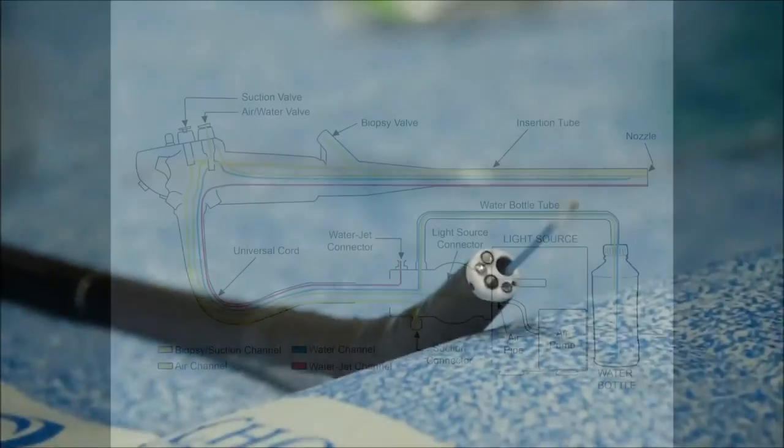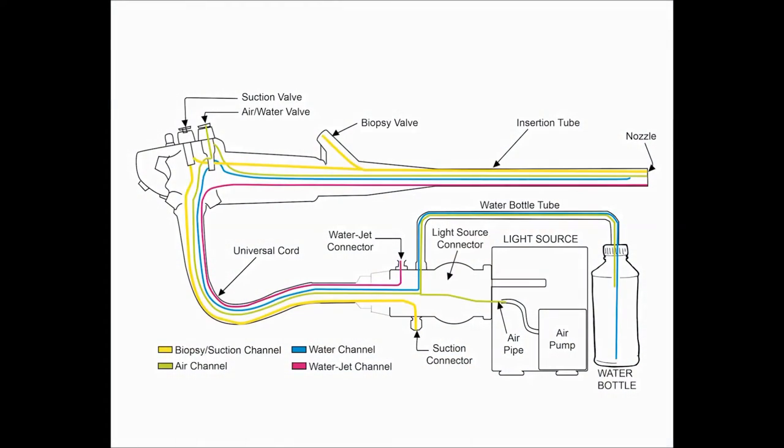Ideally if the scope has been removed from the patient, you may also find that there's an obstruction within the universal cord, here highlighted in red. If this occurs, this has to be cleaned out in a different method.